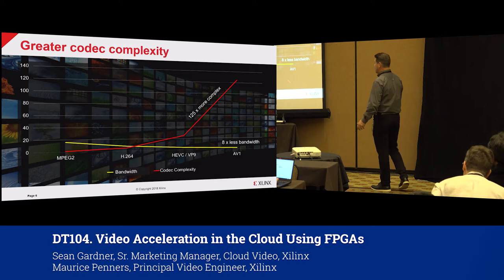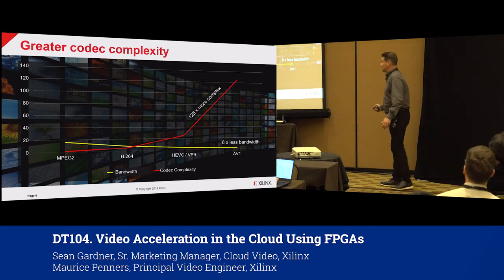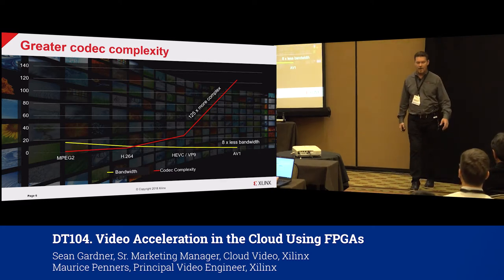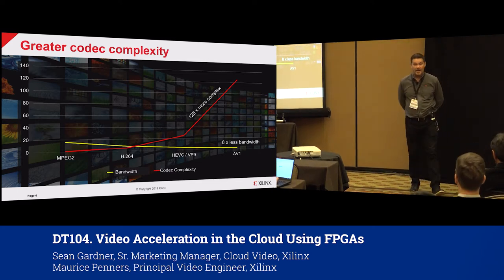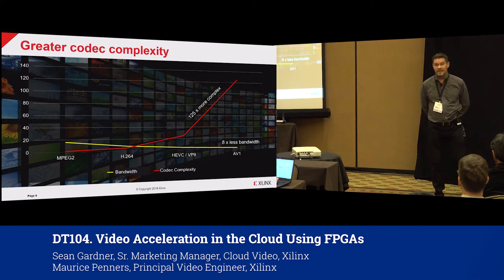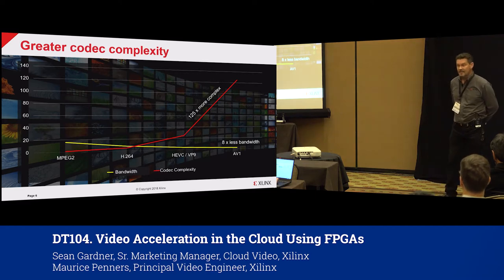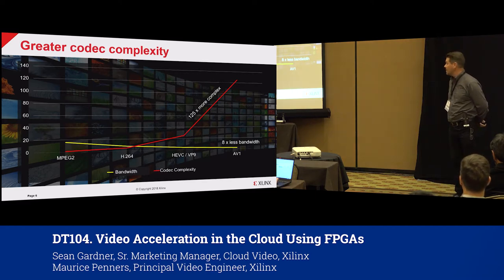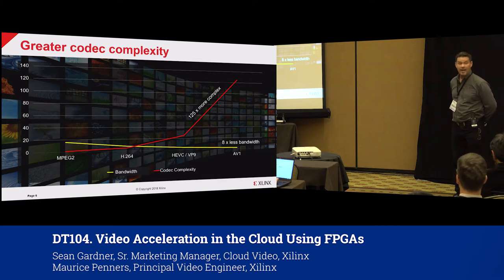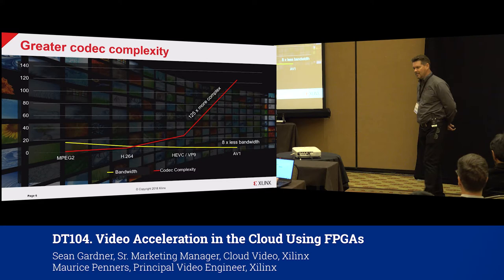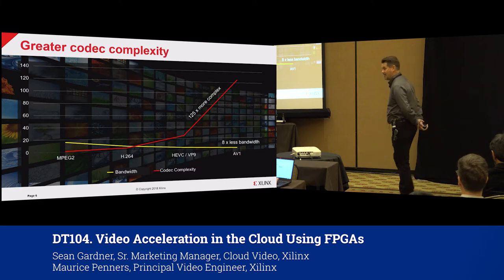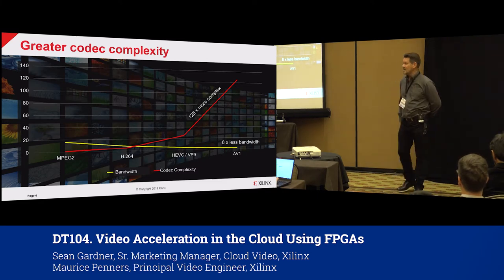There is significant activity and discussion around AV1. We believe AV1 will definitely be a critical codec going forward, but it comes with a big compute penalty. So the question becomes: how do we enable live applications with AV1? We need acceleration of some sort.